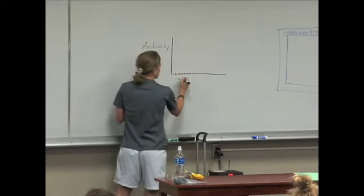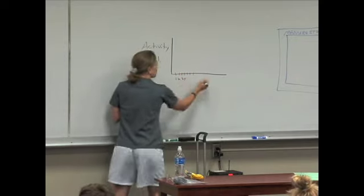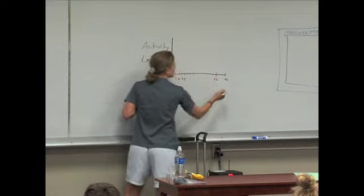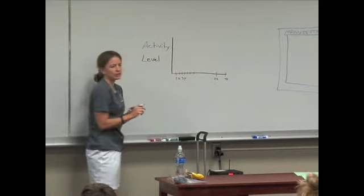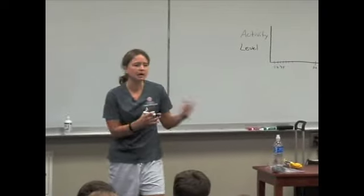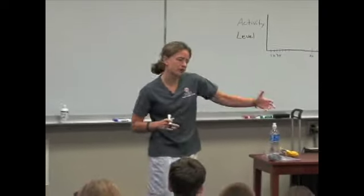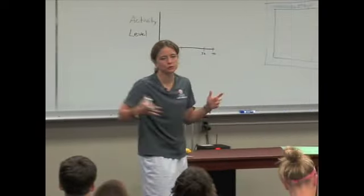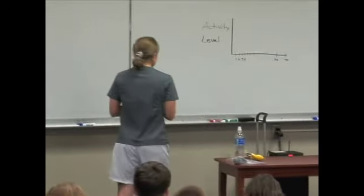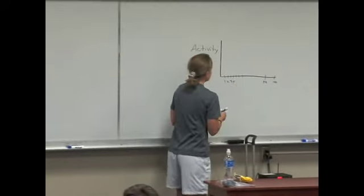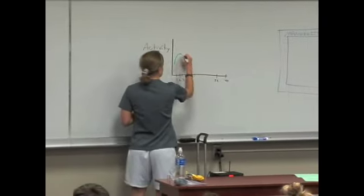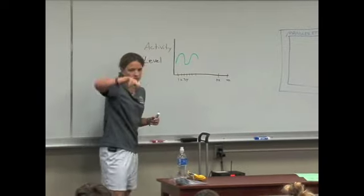So one minute into the game, two, three, four — 32 minutes for a high school game, 40 minutes for a college game. Basketball is a game of starts and stops. You'll sprint down on a fast break, there'll be a dead ball, you'll sprint back on defense. So when this game starts, your activity level might look something kind of like this.